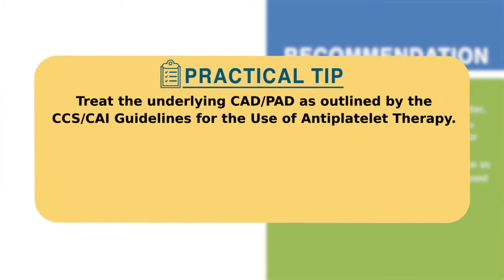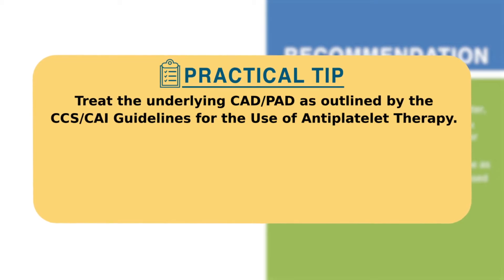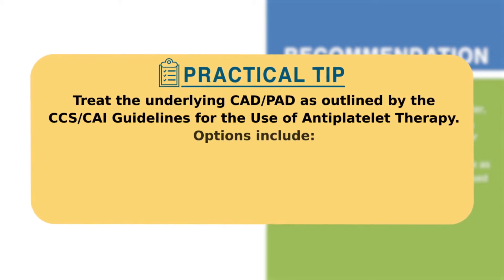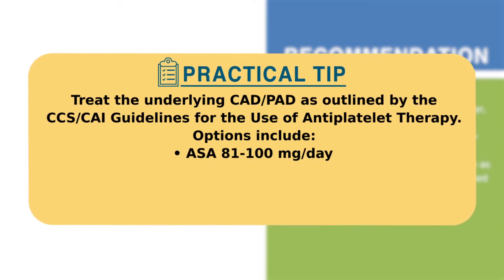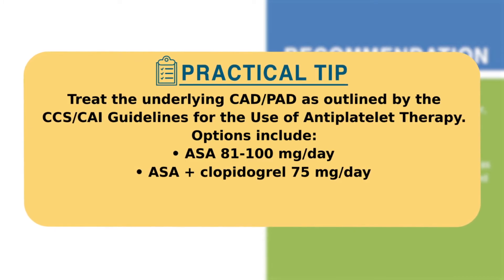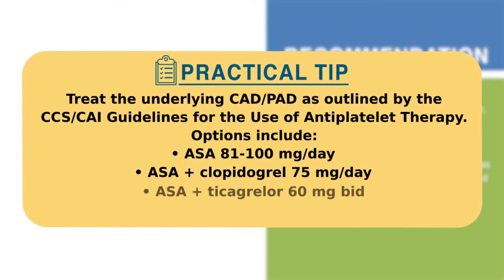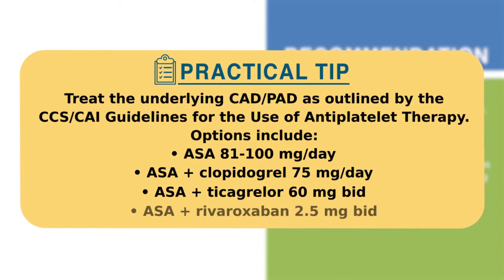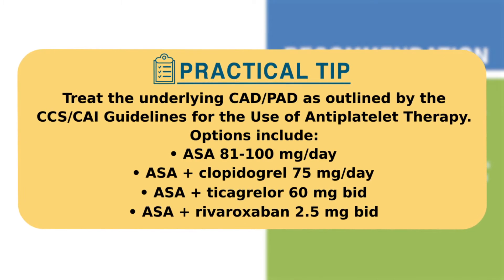Treatment should be directed at the underlying coronary arterial vascular disease. Therapeutic options include ASA 81 to 100 milligrams daily alone, or ASA plus either clopidogrel 75 milligrams daily, ticagrelor 60 milligrams twice daily, or rivaroxaban 2.5 milligrams twice daily.